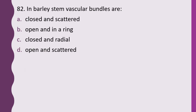Question 82. In barley, vascular bundles in the stem are: closed and scattered, open and in a ring, closed and radial, or open and scattered. The correct answer is option A — they are closed and scattered.